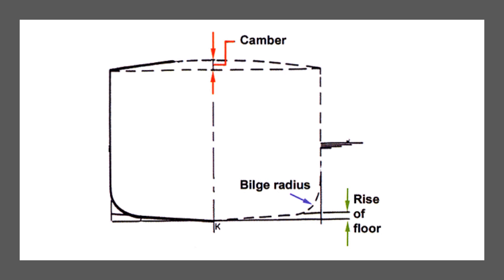Then we move to bilge radius. As you can see, the bilge radius gives the radius of the bilge from which you can pump out water if it gets collected into these areas.